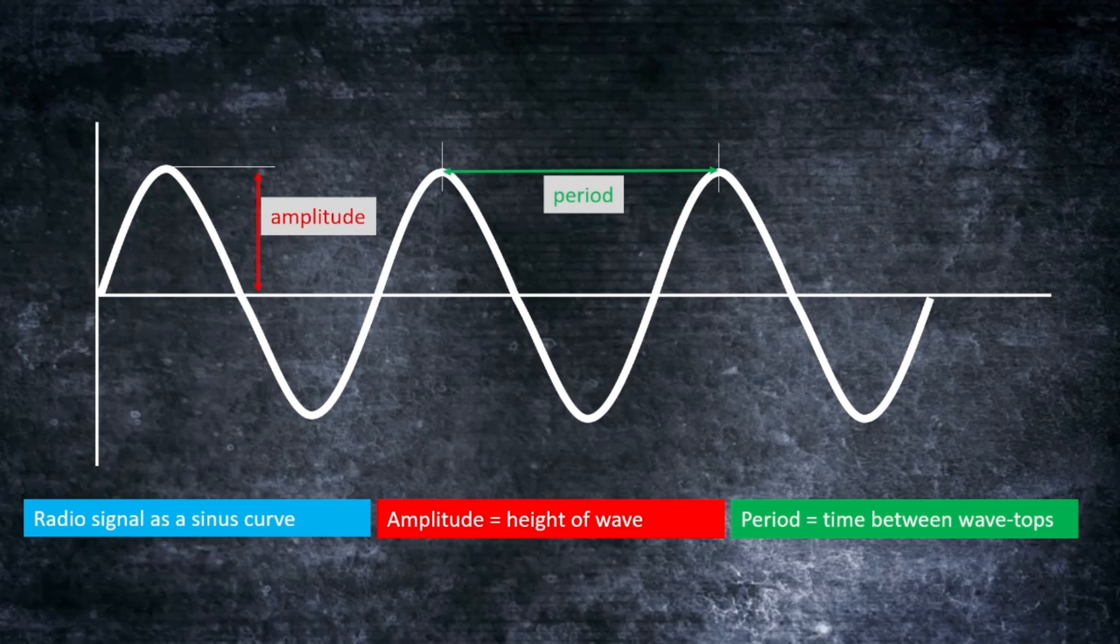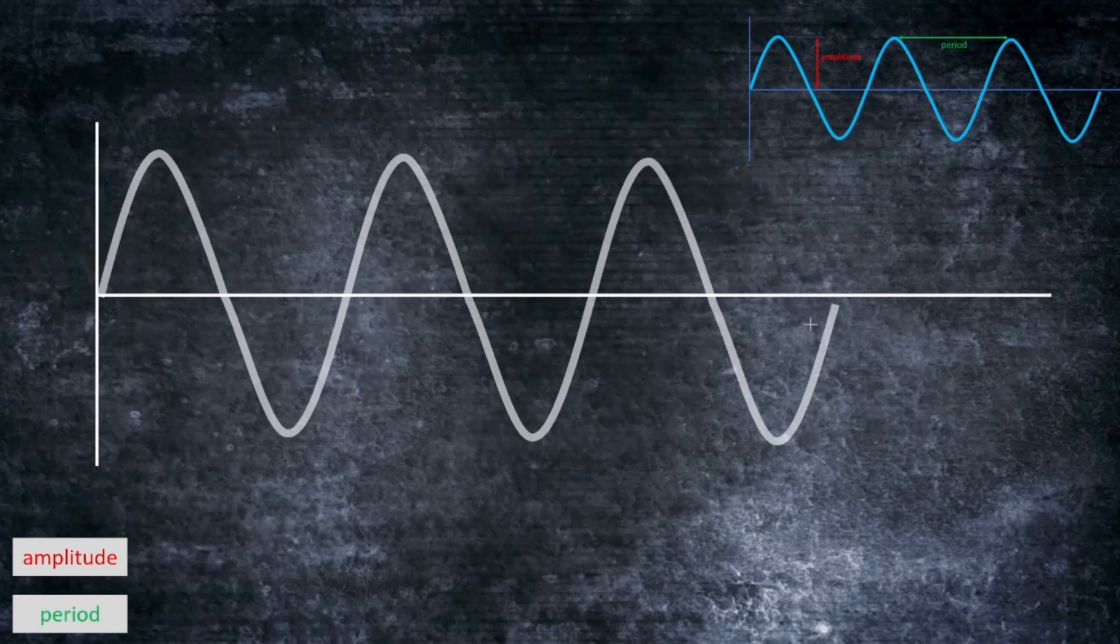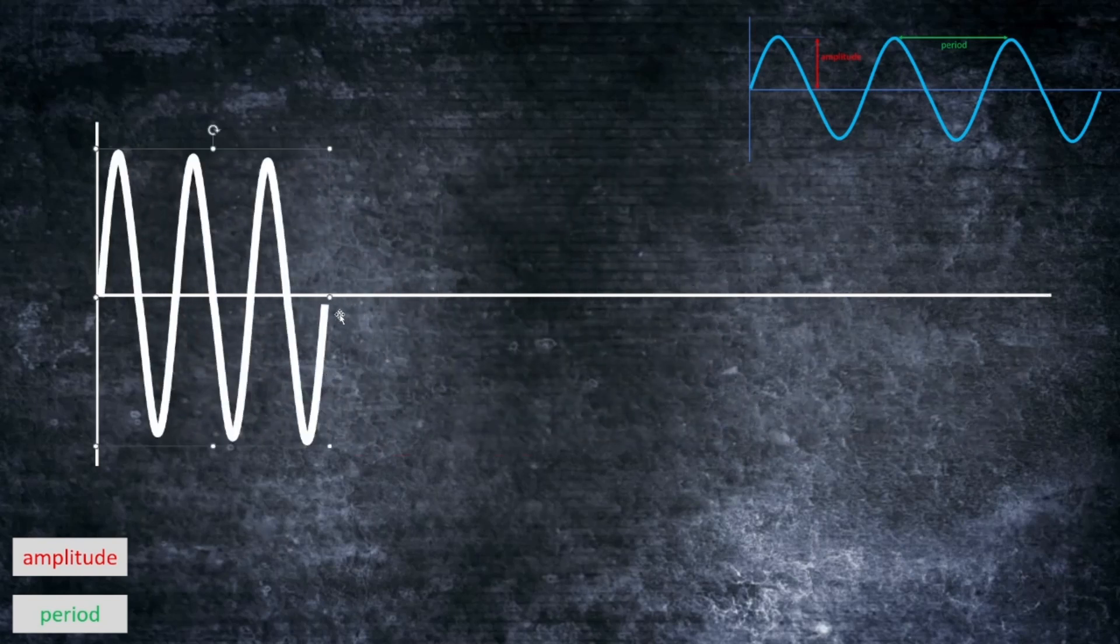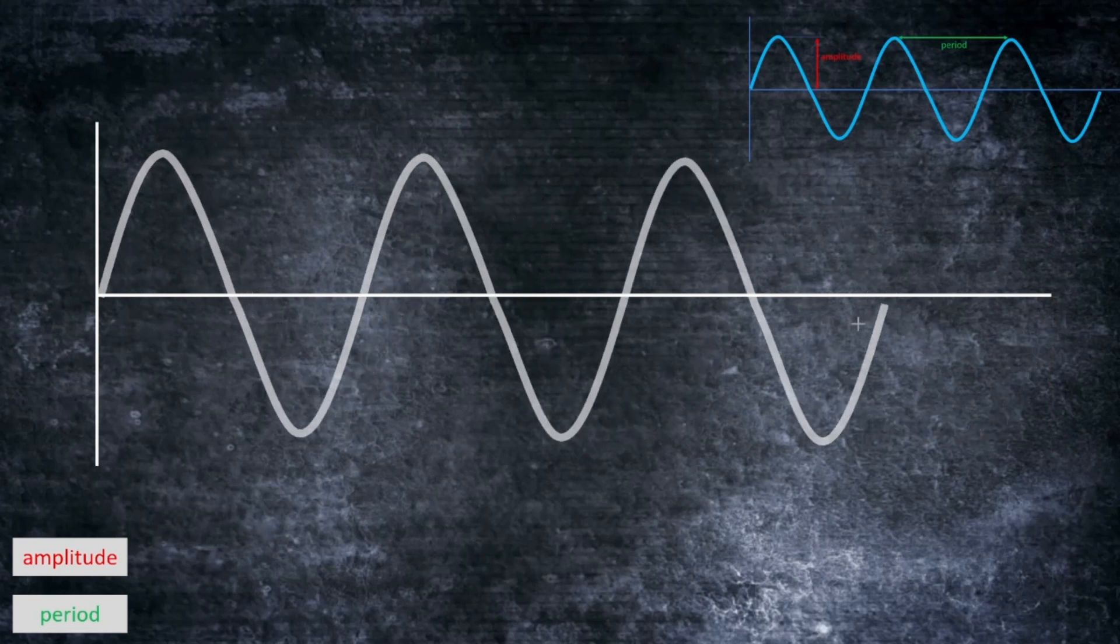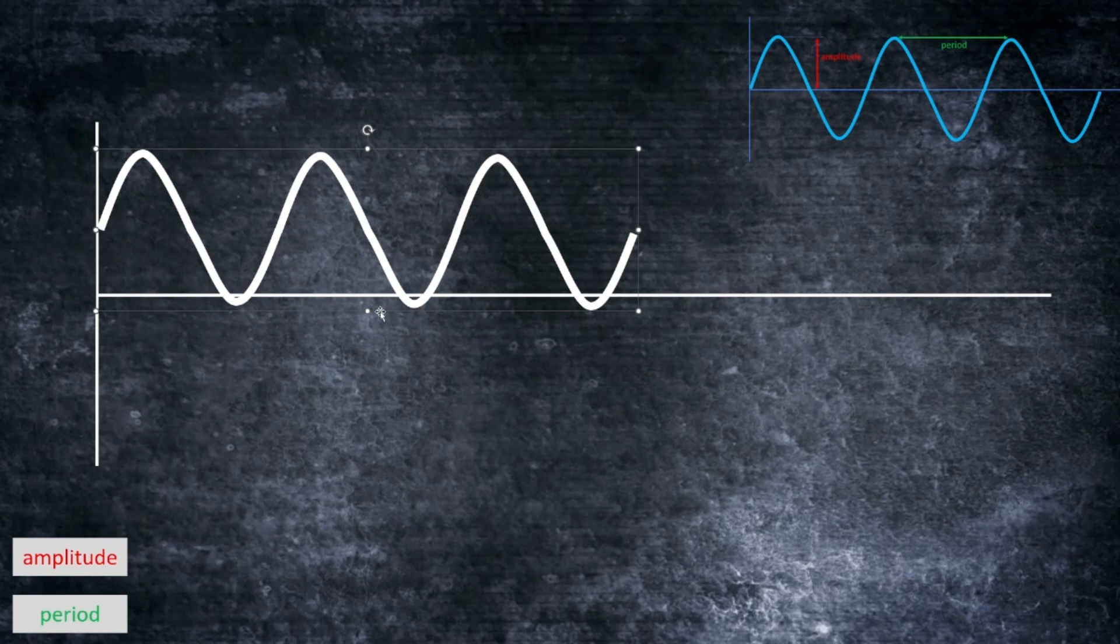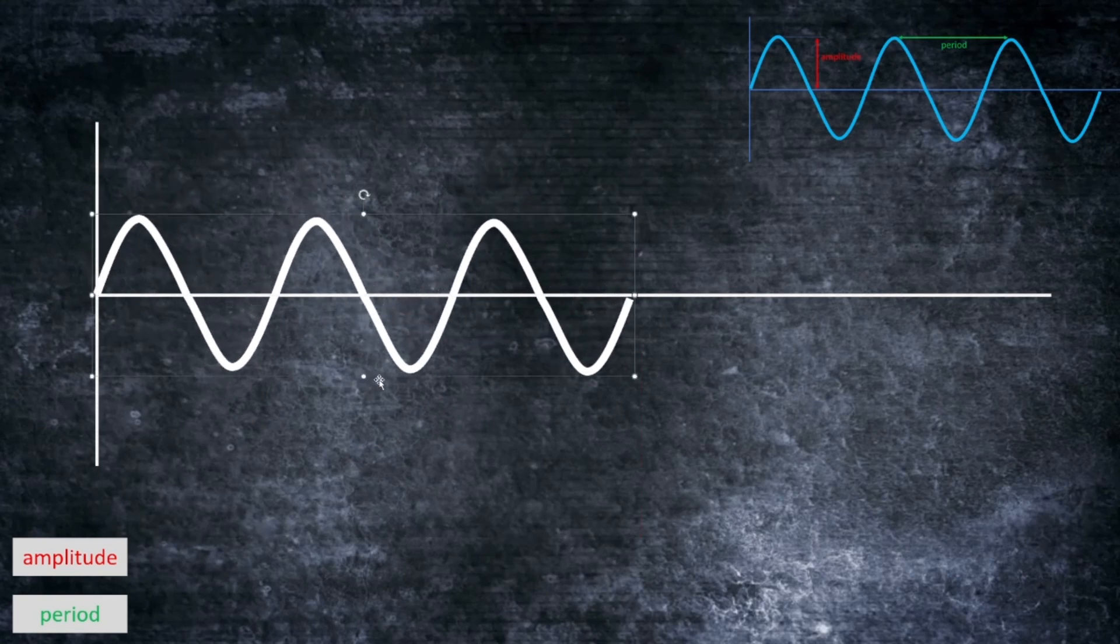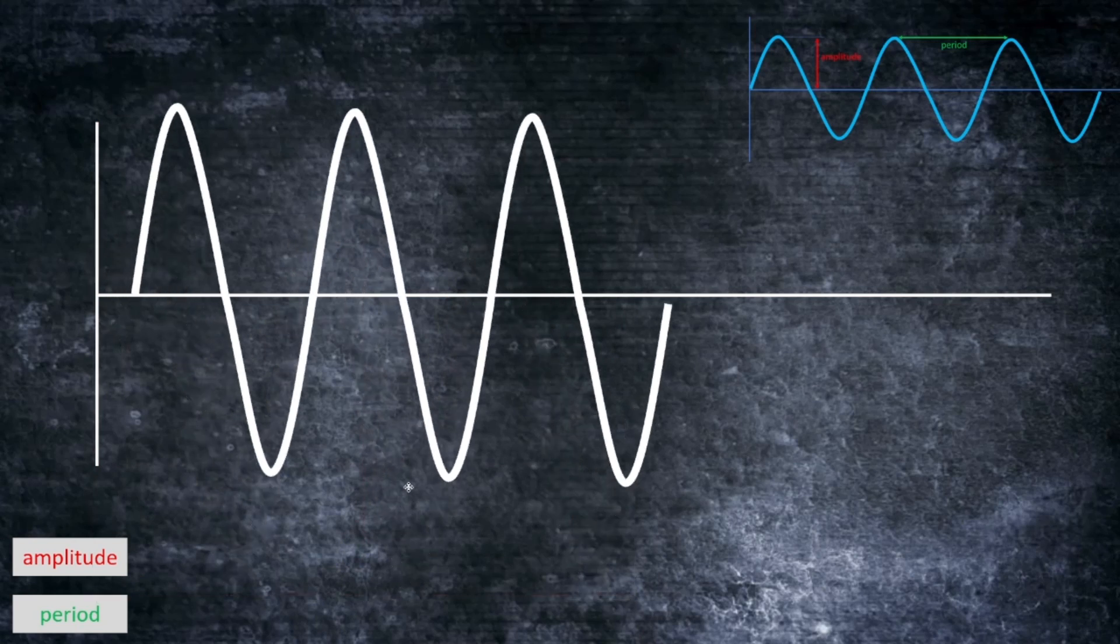So the way we can use this for changing the signal could be either to increase or decrease the frequency—so this is a high frequency signal and this is a lower frequency signal—or we can change the amplitude to say that this is a weaker signal, and we can increase the amplitude by strengthening the signal, saying that this is a stronger signal.